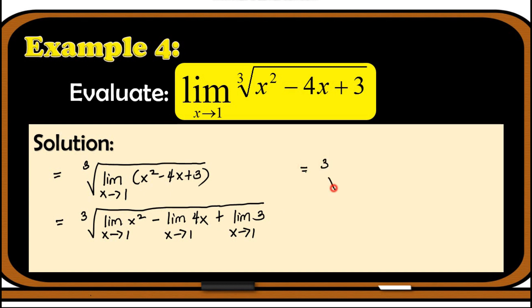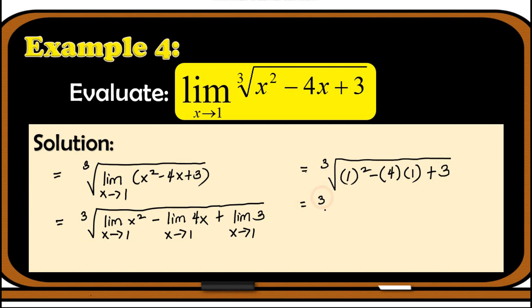We evaluate each term: applying the limit of a power gives 1 squared; applying the limit of a constant multiple gives 4 times the limit of x as x approaches 1, which is 1, so we have 4 times 1; and the limit of 3 as x approaches 1 is the constant 3. Simplifying inside: we have the cube root of 1 minus 4 plus 3, which is the cube root of 0, equal to 0.